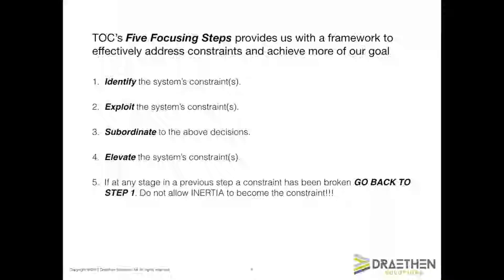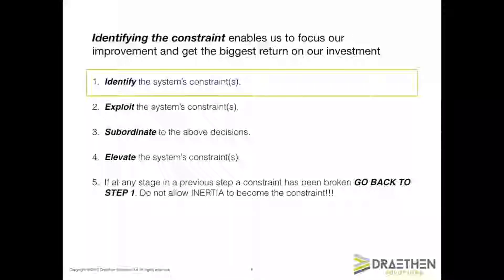Goldratt taught us that all systems exist to achieve a goal. For a manufacturing company, that is most likely to be make money now and in the future. For a school, it would be to educate pupils; a hospital to treat patients, etc. For the purposes of this series of videos, let's assume that the goal of our little plant is to make money now and in the future. The constraint of a system determines its ability to achieve its goal — it limits us from achieving more of what we want.